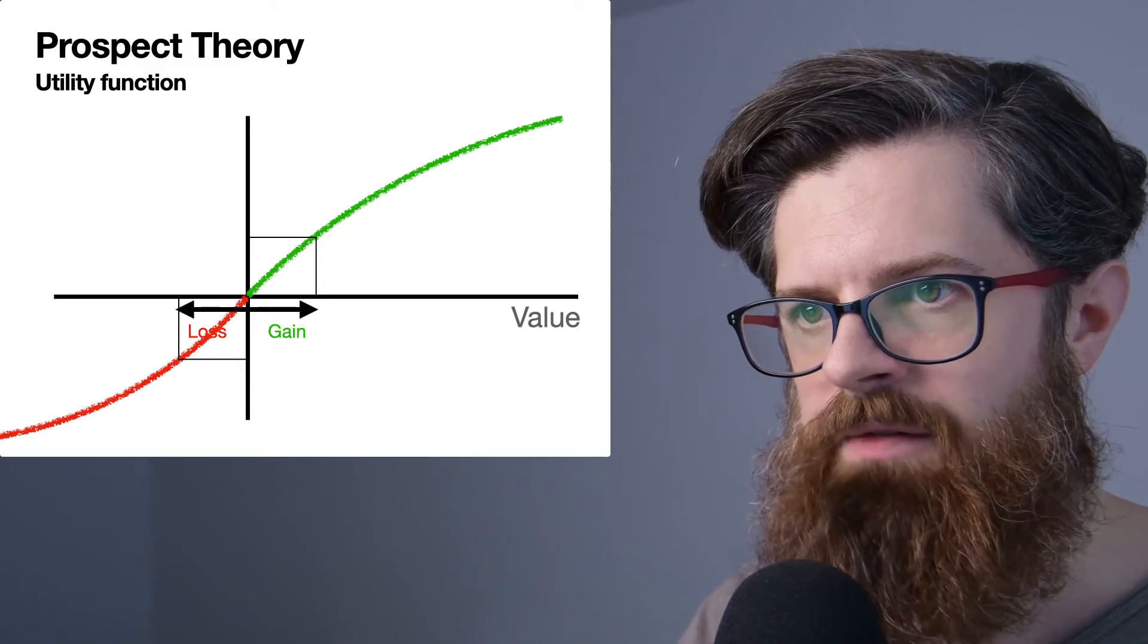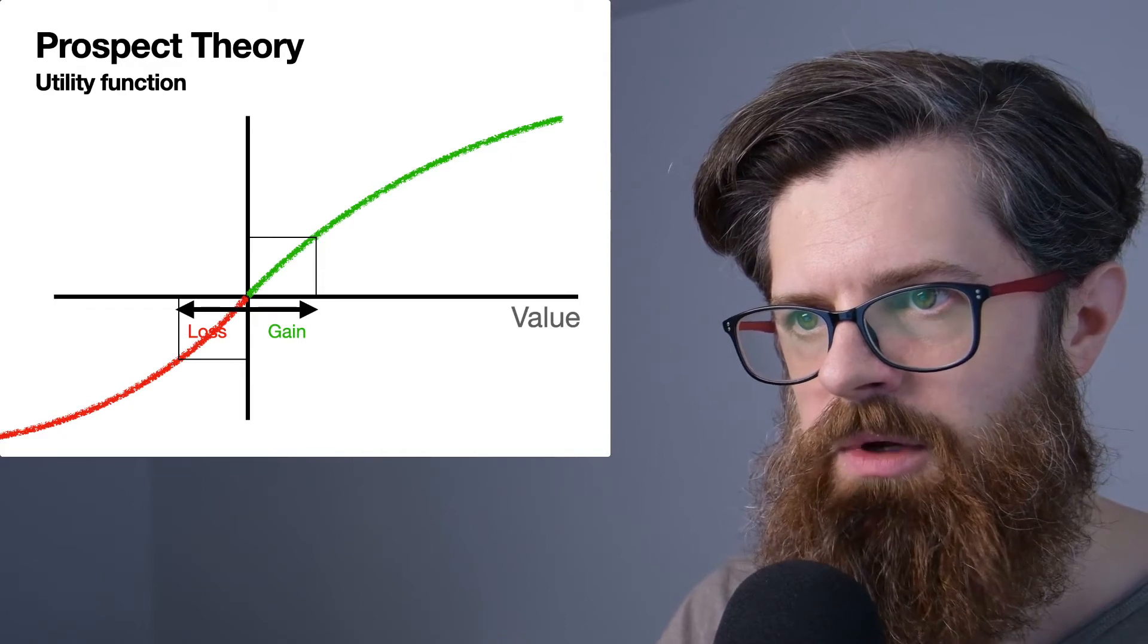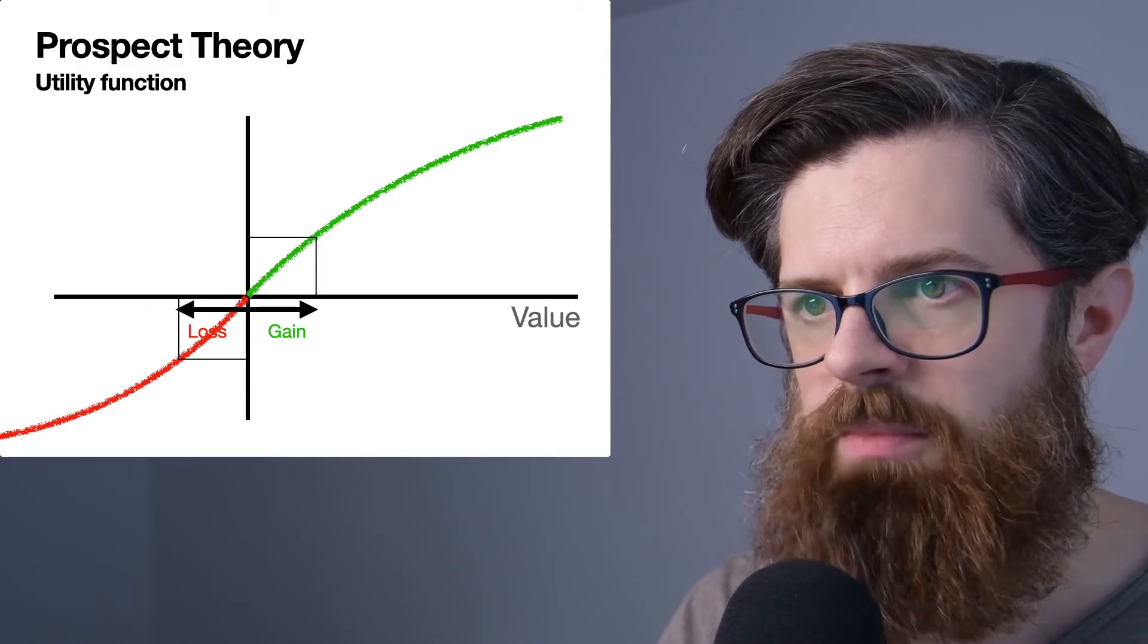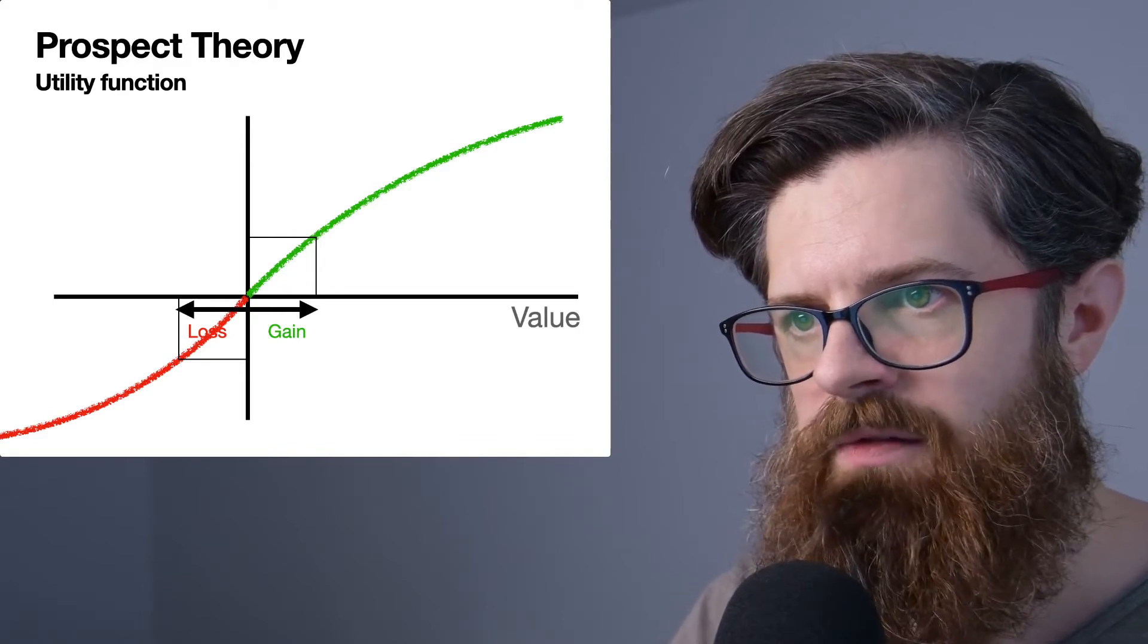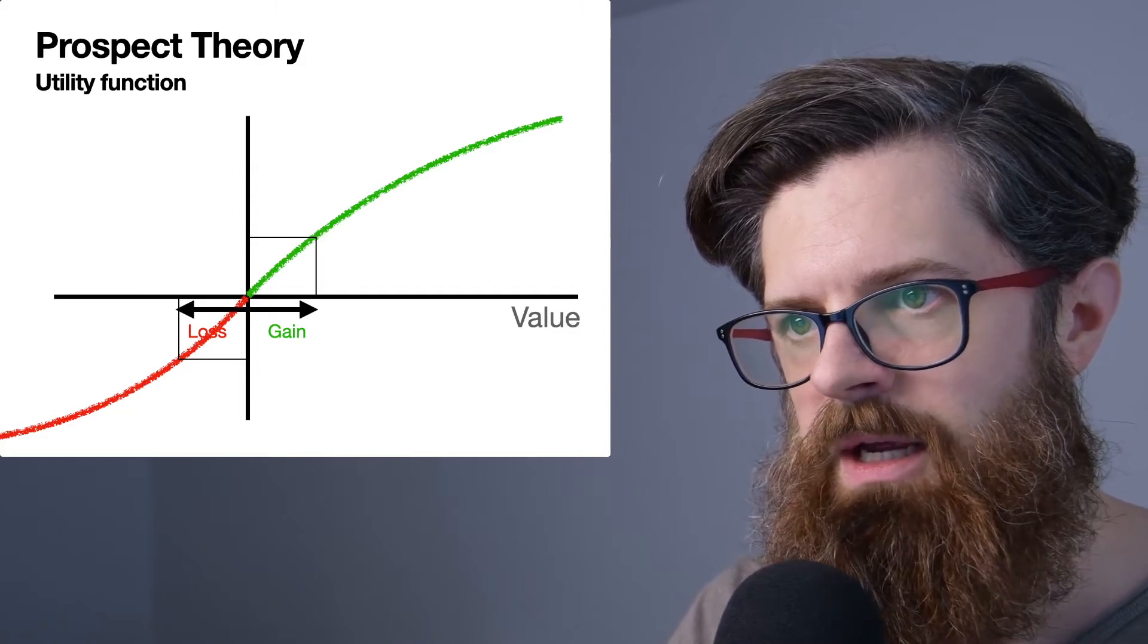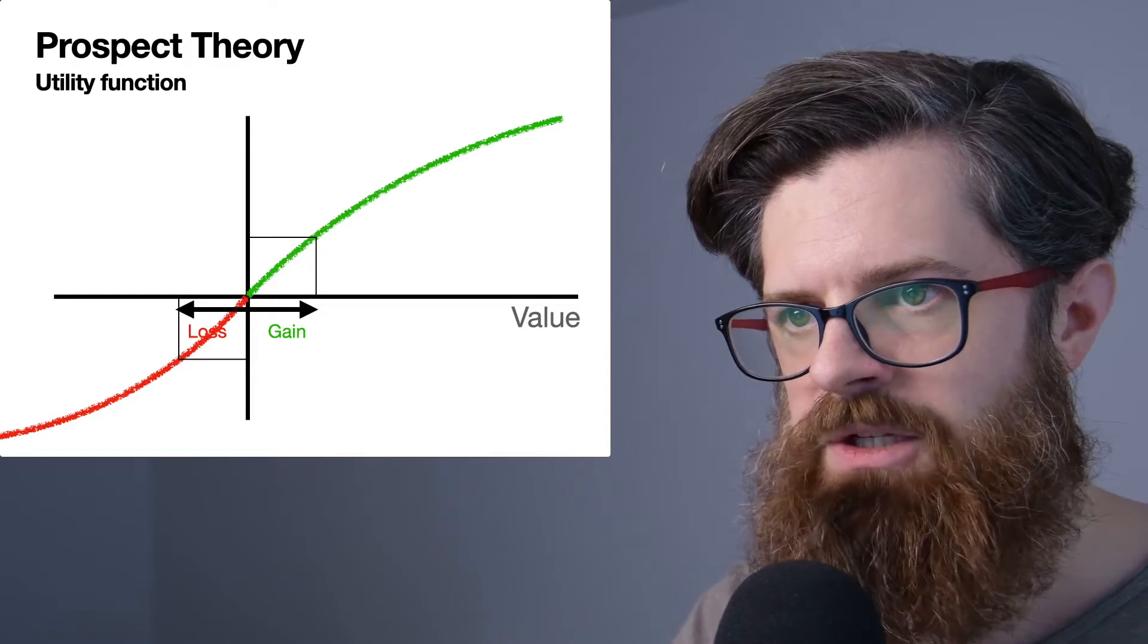We can see with the thick green line that we have this shape which is perhaps similar to Bernoulli's idea. The curve has the property of diminishing returns: when you have zero money you have zero utility, as you get more money your utility goes up, but as you get more and more...